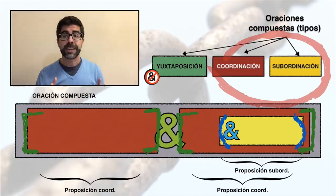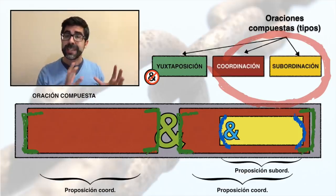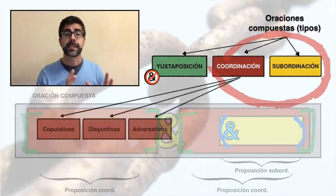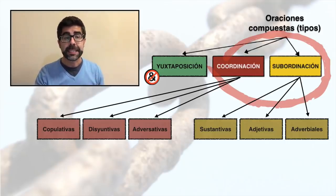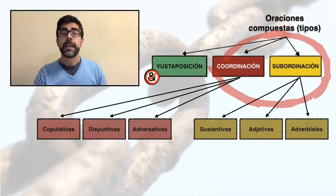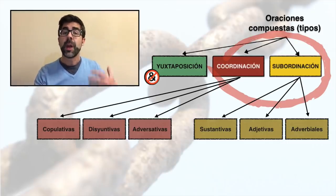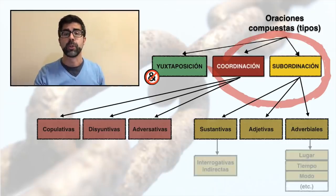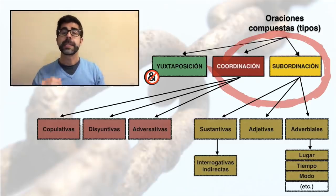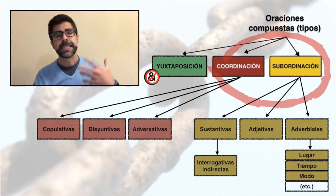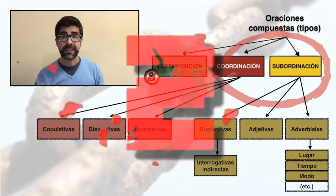Es conveniente conocer muy bien los Nexos, porque tanto las coordinadas como las subordinadas poseen subtipos: copulativas, disyuntivas y adversativas; sustantivas, adjetivas y adverbiales. Y los subtipos de las subordinadas contienen, a su vez, nuevos subtipos: interrogativas indirectas, propias e impropias, concesivas, causales, condicionales, etc.